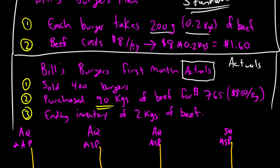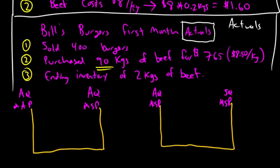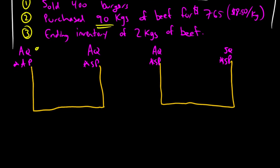AQ, Bill's actual quantity of materials purchased. So, he purchased 90 kilograms of beef. That's his AQ. So, AQ is 90 kilograms. I can fill it in here, too, because it's the same. I should note, the left prong is for direct materials purchased.